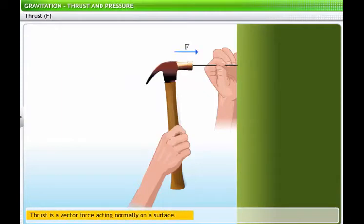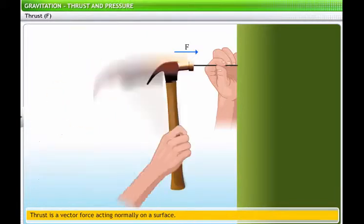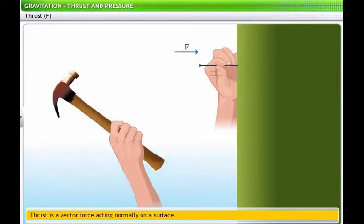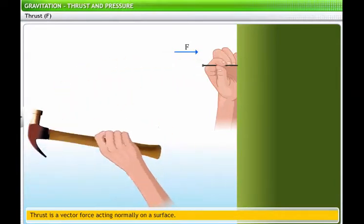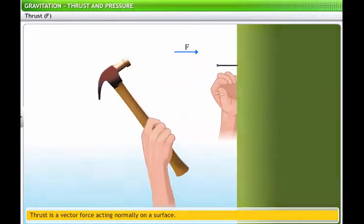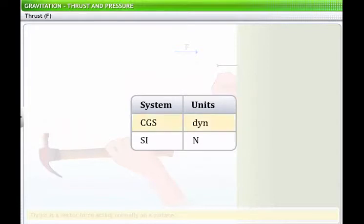Thrust is a vector force acting normally on a surface and is denoted by F. For example, consider the simple act of driving a nail into a wall with a hammer. The force that you exert on the hammer during this activity is thrust. Thrust is measured in dyne in the CGS system and newton (N) in the SI system.